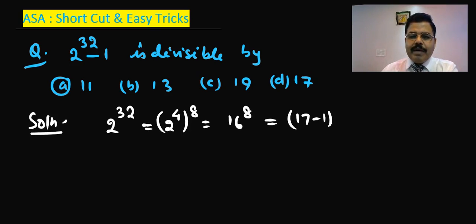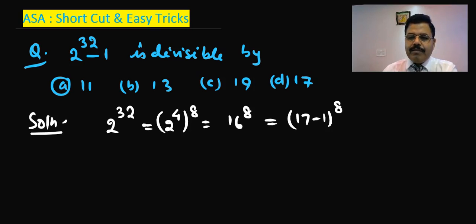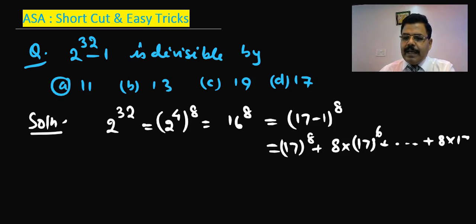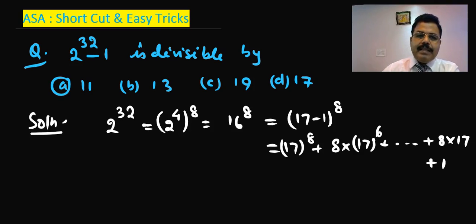Since the power is 8 — an even number — the last term will definitely be positive. When you expand this using the binomial theorem, the expansion will come like 17 to the power 8, then something like 8 times 17 to the power 6, and similarly terms will come down, finally ending with 8 times 17, plus 1. But because of the negative sign, alternate signs will be negative.